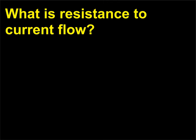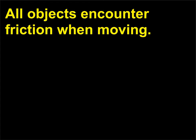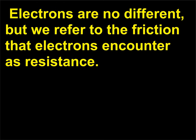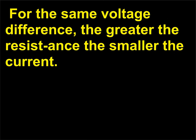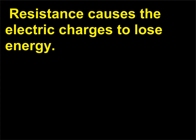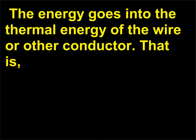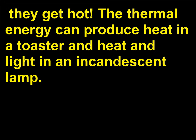What is resistance to current flow? All objects encounter friction when moving, and electrons are no different — we refer to the friction that electrons encounter as resistance. The electrons collide with the atoms in a wire and are deflected from their paths. For the same voltage difference, the greater the resistance the smaller the current. Resistance causes the electric charges to lose energy; that energy goes into the thermal energy of the wire or other conductor — they get hot. The thermal energy can produce heat in a toaster and heat and light in an incandescent lamp.